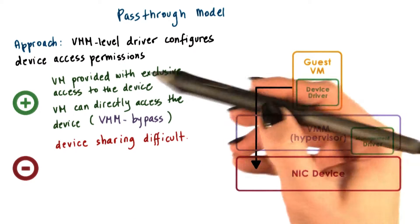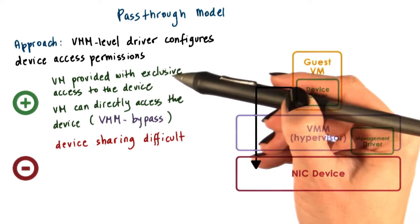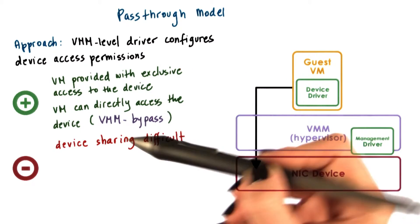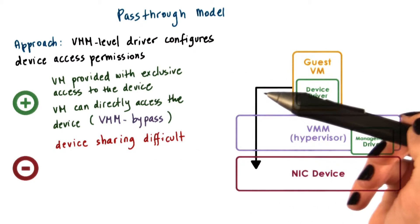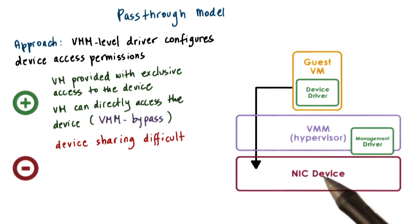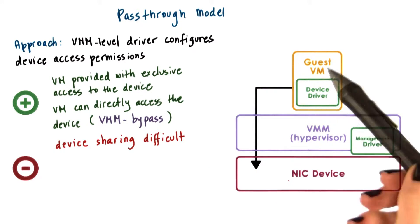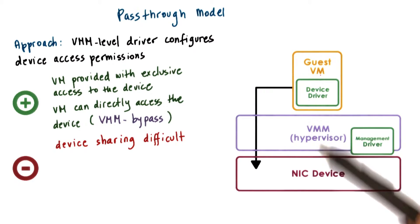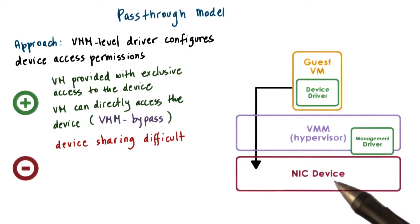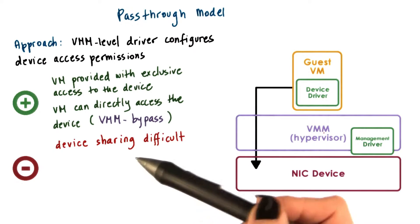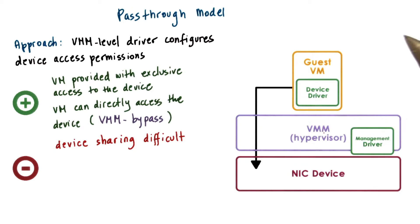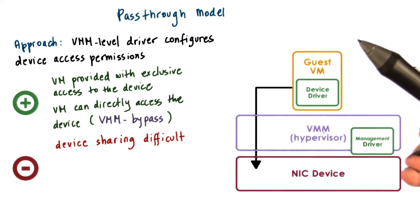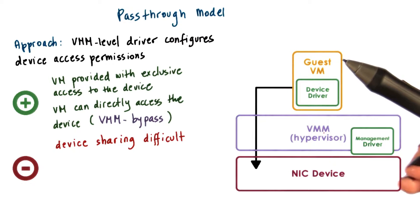Now clearly, once we start providing VMs with exclusive access, figuring out a way to share devices will become difficult. We'll basically have to continuously reassign which particular VM can access a particular device over time, but the sharing will not happen simultaneously or concurrently. In some cases, this is really not doable because of limitations of the device.